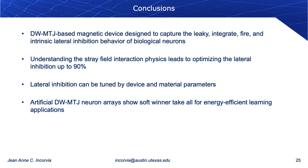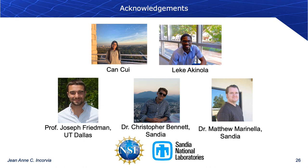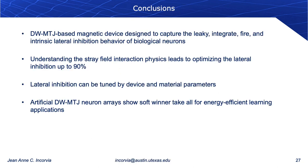In conclusion, domain wall magnetic tunnel junction neurons capture leaky integrate-and-fire and intrinsic lateral inhibition similar to biological neurons. Understanding the stray field interaction physics leads to optimization of lateral inhibition up to 90%, tunable by device and material parameters. In arrays, these DW-MTJ neurons show soft winner-take-all behavior, which can be used for energy-efficient learning applications. I would like to acknowledge Hassan, who led this work as graduate student, and our collaborators. Please feel free to email me for more information or follow-up discussion. Thank you for listening.